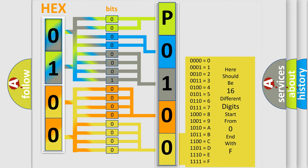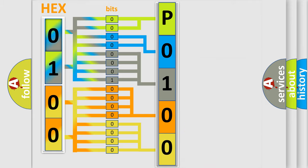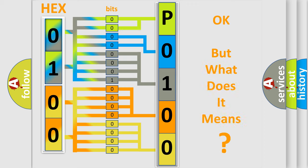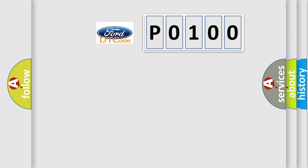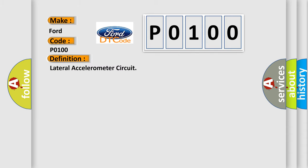We now know in what way the diagnostic tool translates the received information into a more comprehensible format. The number itself does not make sense to us if we cannot assign information about what it actually expresses. So, what does the Diagnostic Trouble Code P0100 interpret specifically for car manufacturers?